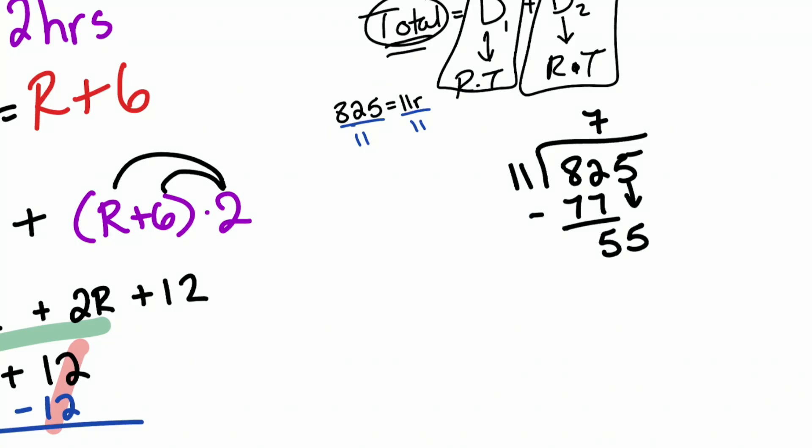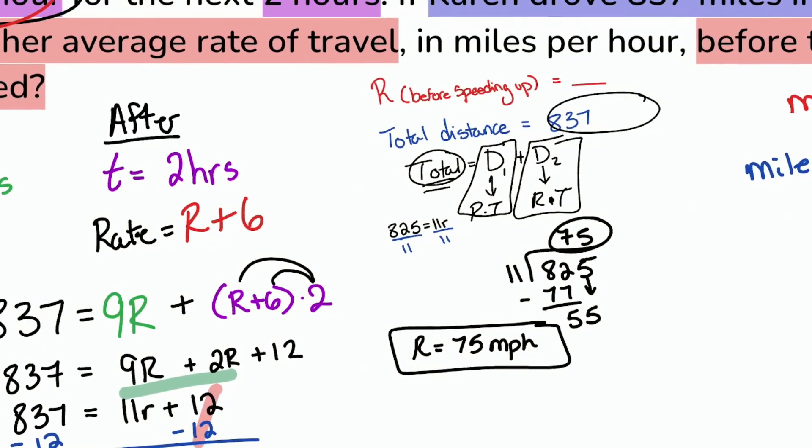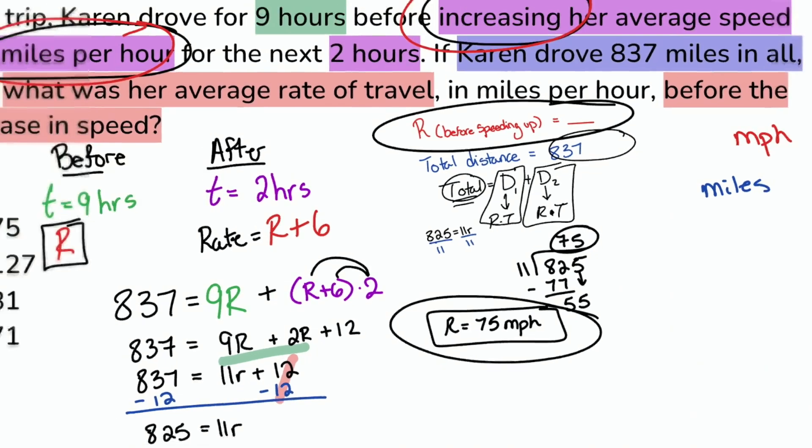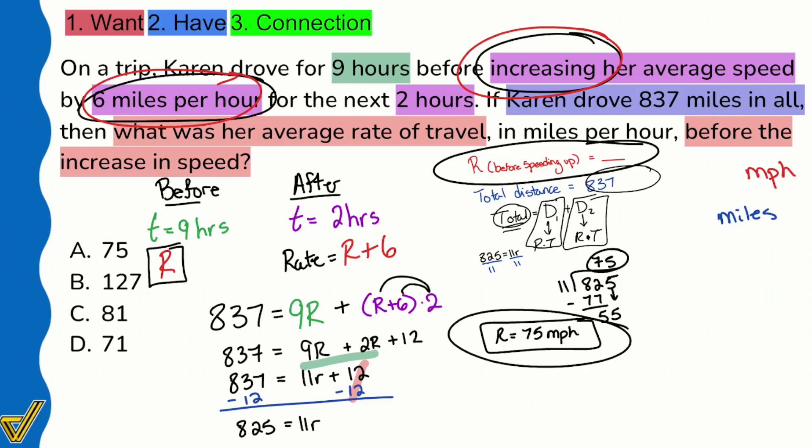The original rate before the increase in speed was 75 miles per hour. Because we set the variable up to represent exactly what we wanted to find, once we found it we're good. There's our answer: 75 miles per hour before the increase in speed. It was 81 miles per hour after the increase in speed. Make sure to start with what you want, what you have, and then the connection, and you'll be on your way to a higher ASVAB score.